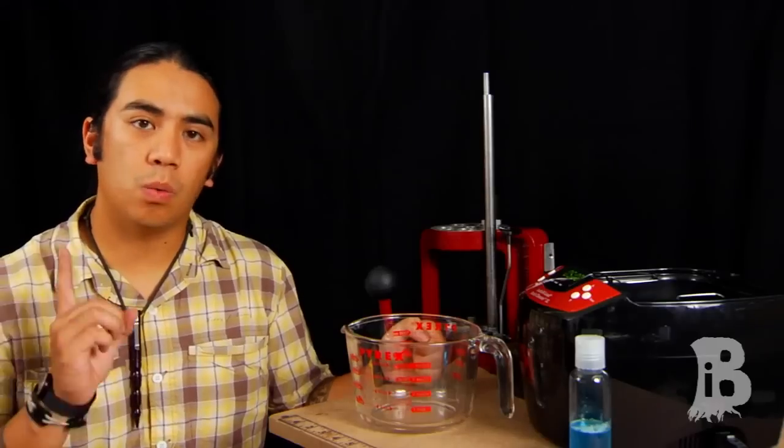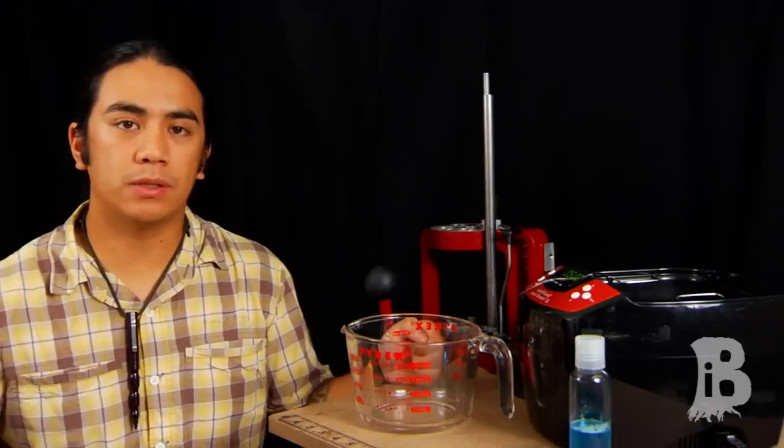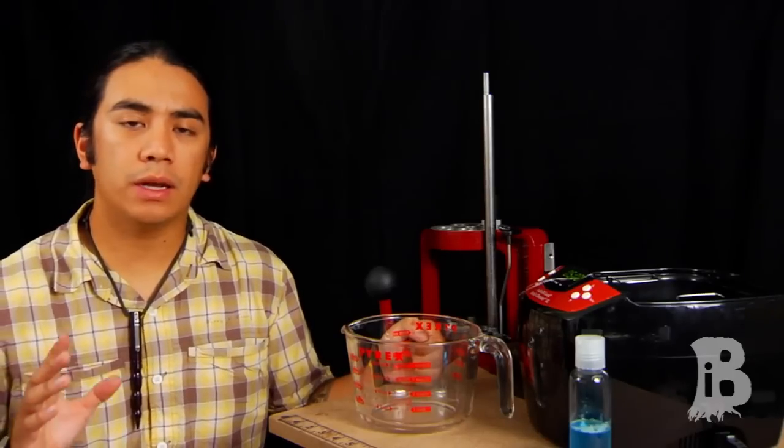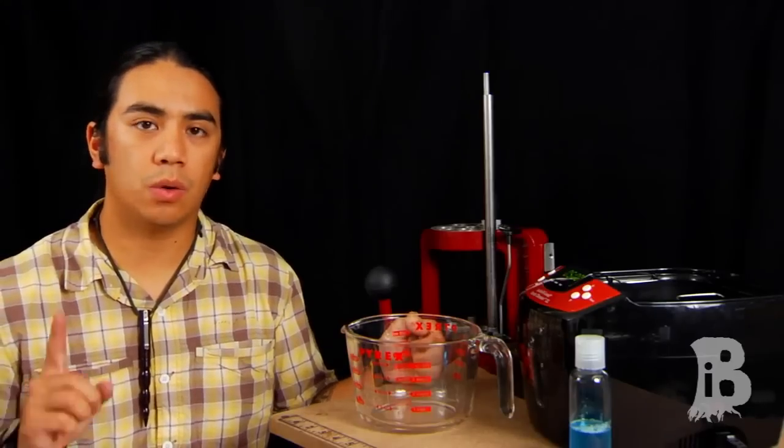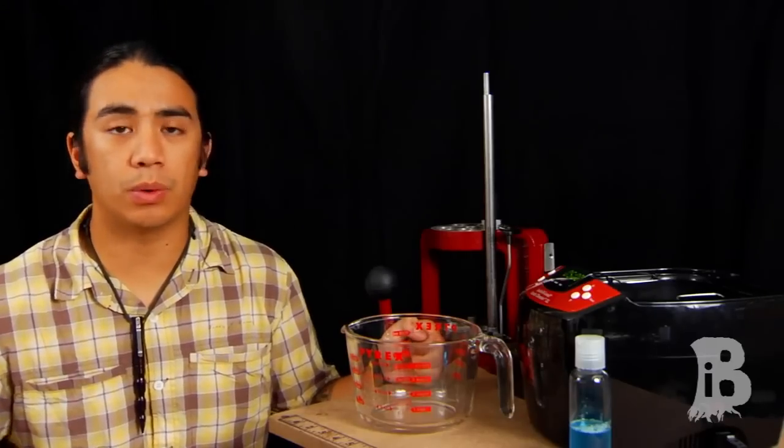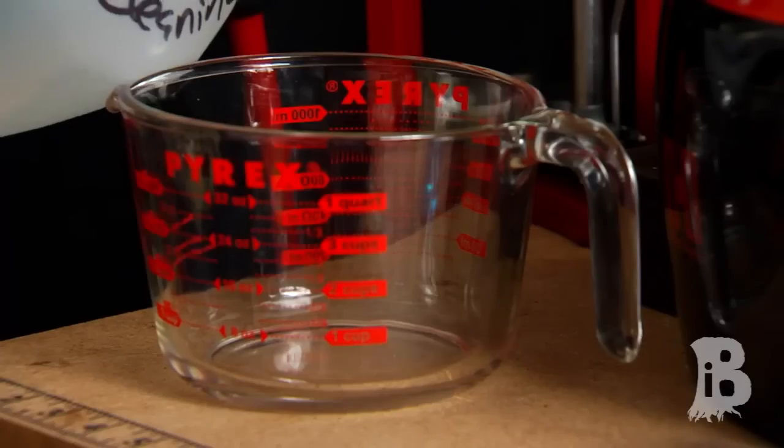The solution is going to be one part water, one part distilled vinegar, and for every eight ounces or one cup of water, go ahead and use one drop of Dawn dish soap or whatever dish soap you have.